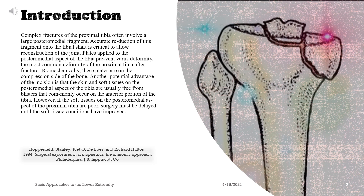Complex fractures of the proximal tibia often involve a large postero-medial fragment. Accurate reduction of this fragment onto the tibial shaft is critical to allow reconstruction of the joint. Plates applied to the postero-medial aspect of the tibia prevent varus deformity, the most common deformity of the proximal tibia after fracture.